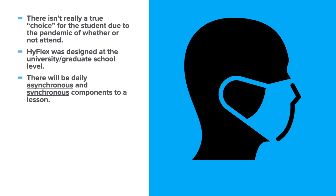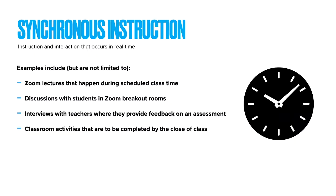At Bergen Tech, there's going to be daily asynchronous and synchronous components to a lesson. Synchronous instruction is just instruction that occurs in real time, during your class. If you have a class scheduled during period two, this is the instruction that happens at that time. Examples include Zoom lectures that happen during scheduled class times, discussions with students in Zoom breakout rooms, interviews with teachers where they provide you feedback on an assessment, or classroom activities that can be completed at the close of class.